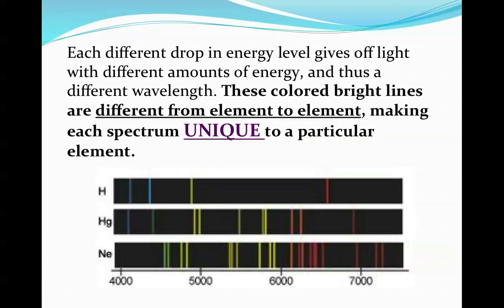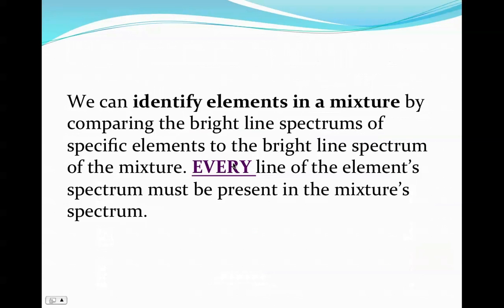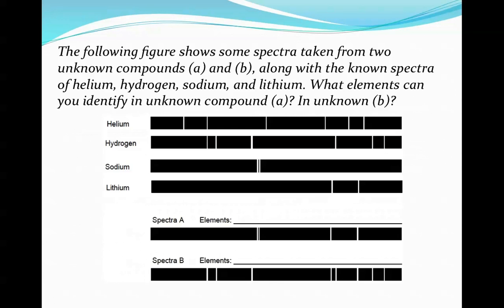Now each different drop in energy levels gives off light with different amounts of energy. So these bright-line spectrums are unique to a particular type of element. We can use them to actually identify elements in a mixture, such as looking at the light that's coming from stars, and we can use that to figure out what elements are in that mixture of gases. Every line of an element spectrum has to be present in the mixture. If just one of those wavelength lines are missing, then that element isn't in the mixture.